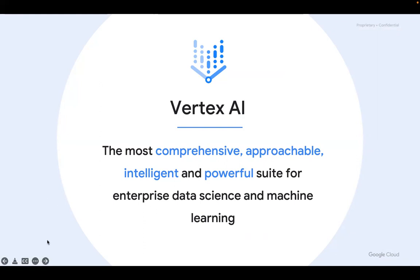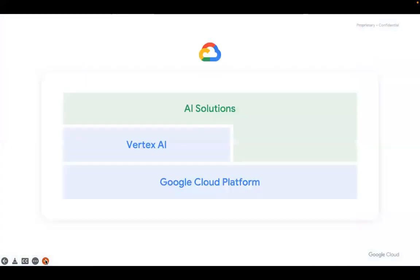Google is leveraging Google Cloud Platform to create an end-to-end machine learning platform that can handle both data science and machine learning related activities. This is the overall view of where Vertex AI sits — it's a combination of AI solutions that Google already has, put on GCP and provided with customizable options through Vertex AI.